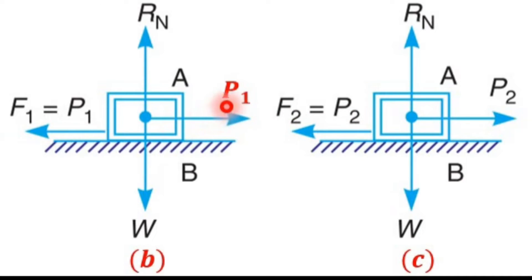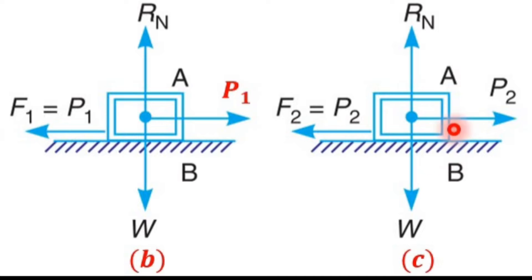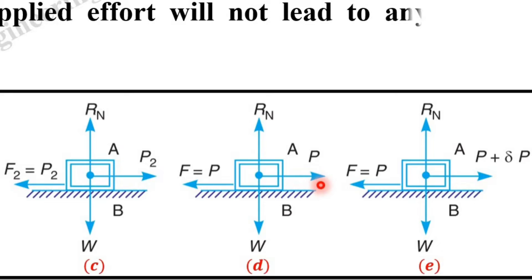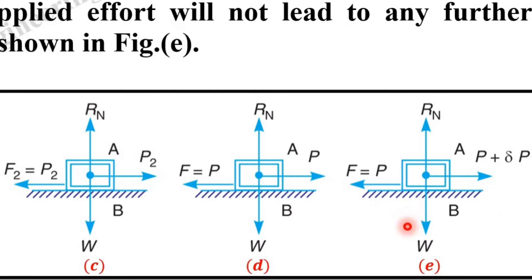When P1 is applied, friction equals P1; when increased to P2, friction equals P2. However, there is a limit beyond which the force of friction cannot increase. As shown in figure D, the maximum value of the friction force is exactly equal to the effort applied at that point. After this maximum limit, any increase in the applied effort will not lead to any further increase in the force of friction, as shown in figure E.